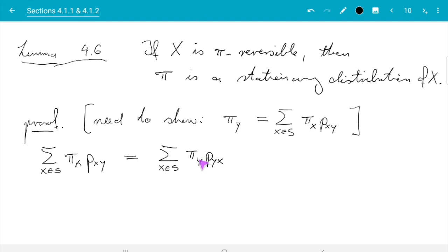So pi_x p_xy we can replace with pi_y p_yx by the detailed balance condition. Then the next step is we see pi_y does not depend on x. It depends on y. That was the benefit of swapping the two. So we can take it out of the sum. So we get pi_y times sum_x in S p_yx. And now we use the fact that P is the transition matrix.